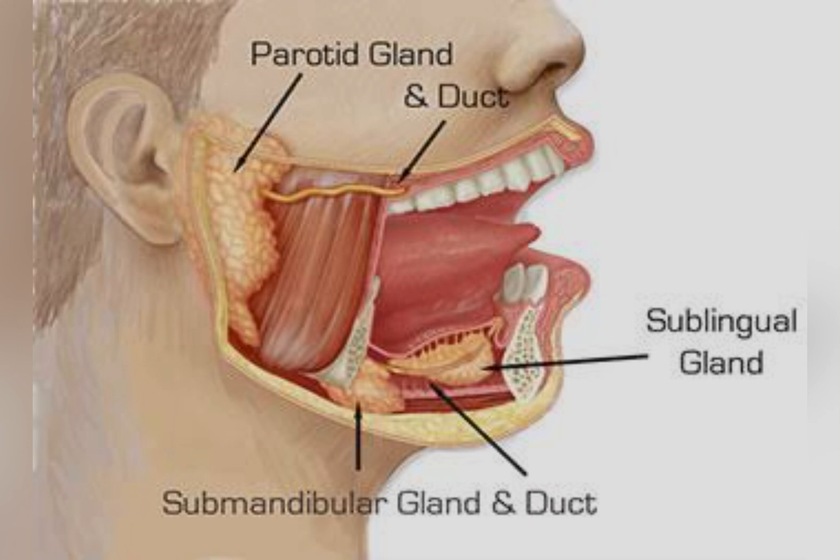Here you can see the parotid duct running along the anterior border of the masseter muscle, which opens opposite to the upper molar tooth.